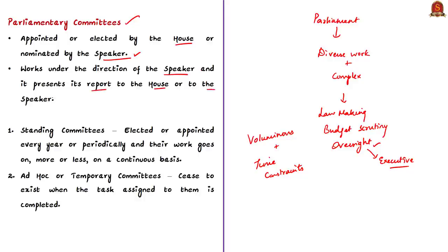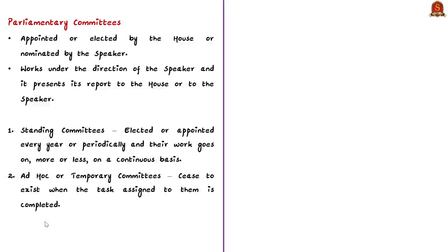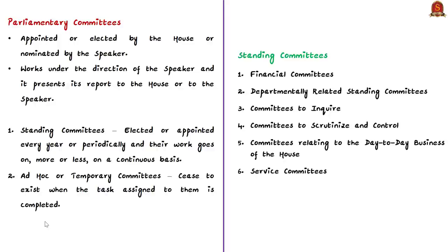The parliamentary committee works under the direction of the speaker of that particular house and presents its report to the house or to the speaker. In parliament there are two kinds of parliamentary committees: standing committees and ad hoc or temporary committees. Standing committees are elected or appointed every year or periodically and their work goes on more or less on a continuous basis, whereas ad hoc committees cease to exist when the task assigned to them is completed.